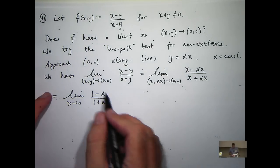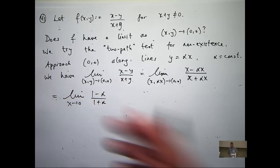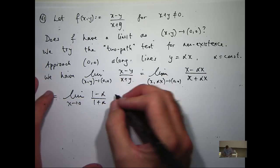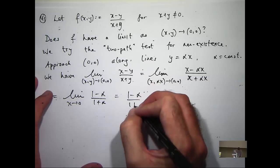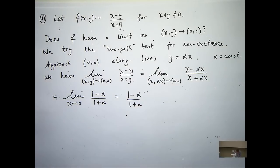Now you can see there's no x's here. So when I take the limit, I'm just going to get 1 minus alpha over 1 plus alpha. Now because the alphas are still there, it means that if you go along two different lines, say y equals 2x and y equals minus 2x, you're going to get different answers.